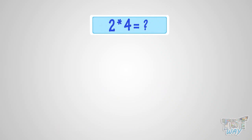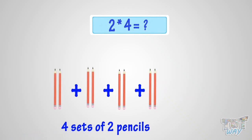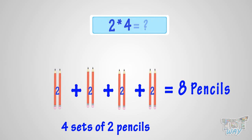It is the same as four sets of two pencils. Two plus two plus two plus two equals eight. So it is eight pencils. That is, two multiplied by four is eight.